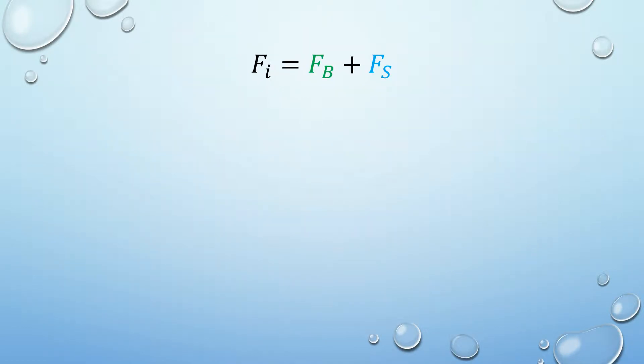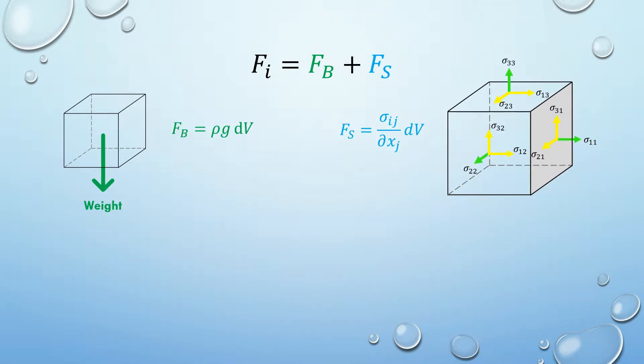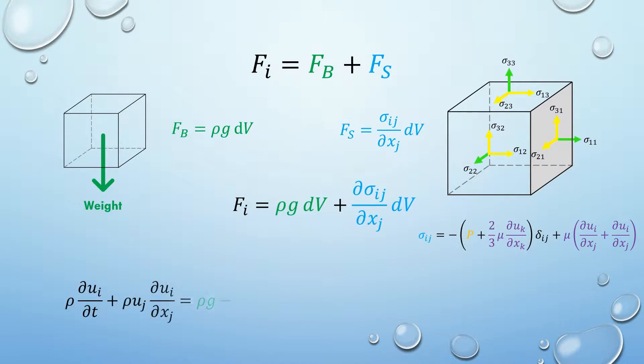Now let's put all the forces together. You have the body force and the surface force. And combined them, you get this. Substitute the fluid stress tensor we have just learnt. We have completed the right hand side of the Navier-Stokes equations.